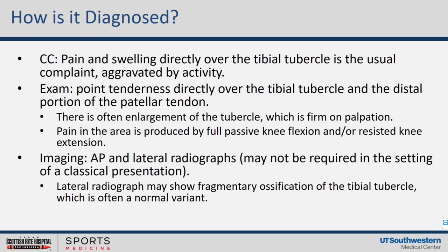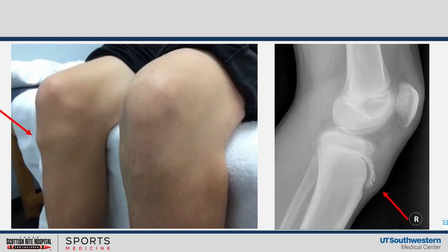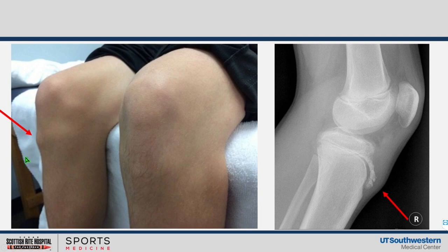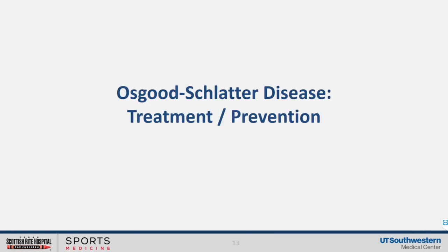Imaging is not necessary in routine cases, but if you want X-rays, an AP and lateral film may sometimes be helpful to exclude other pathology. On the lateral radiograph, you may see some fragmentary ossification. You can see here where the red arrow on the right shows the soft tissue swelling overlying, as well as some of the fragmentary ossification. And then a typical presentation of what you may see on a patient when you walk in the exam room is that classical bump.